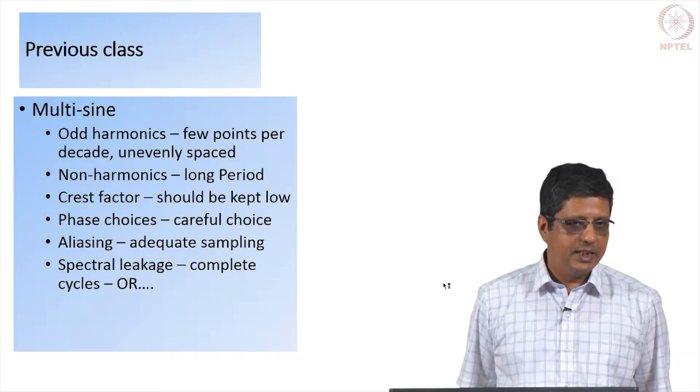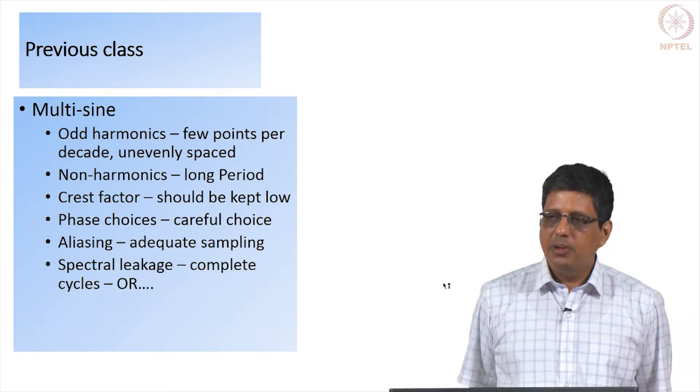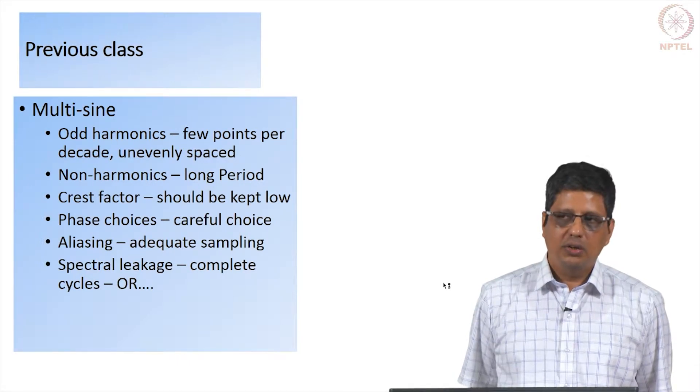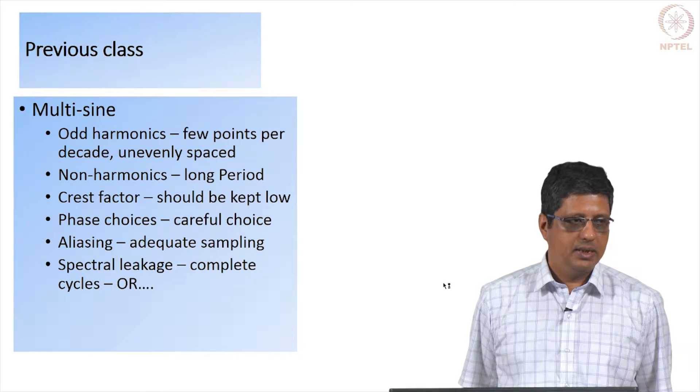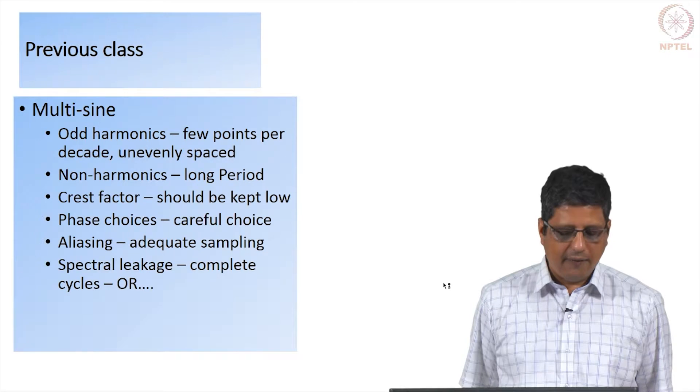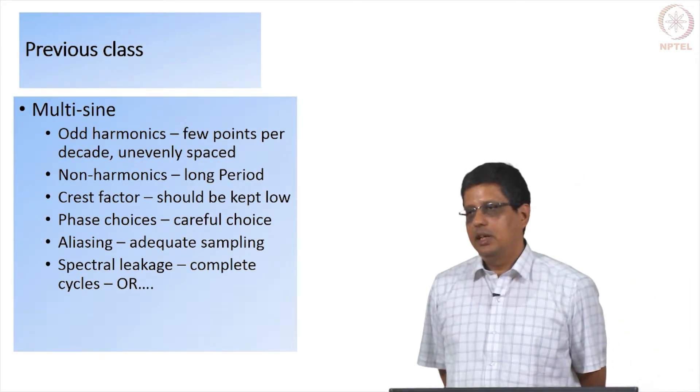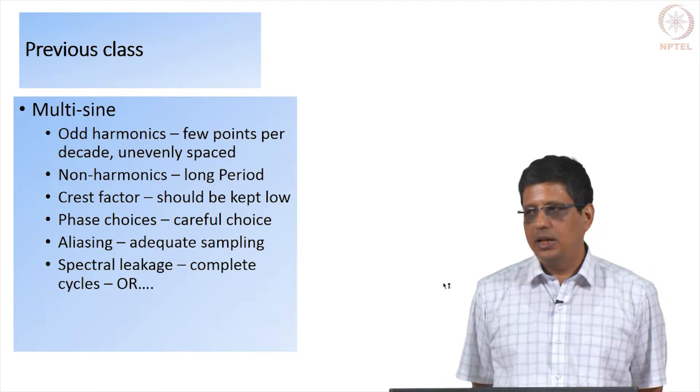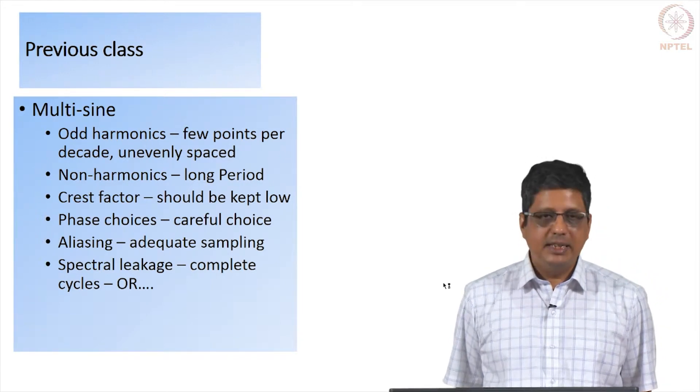And sometime people use random phase, sometime you can use zero phase which is easy to use. And you can also optimize using numerical methods and get the phase values. But each one comes with its own disadvantage, you have to be aware of them. And we also saw an example where if we do not sample it fast enough, if we sample it at low sampling rate, you may get misleading results.